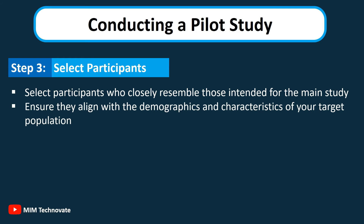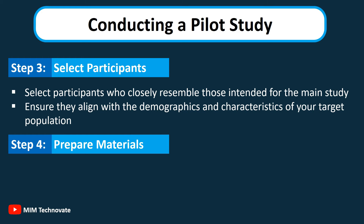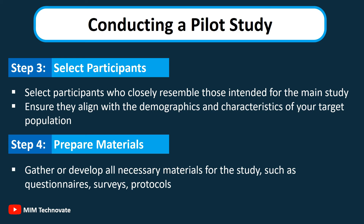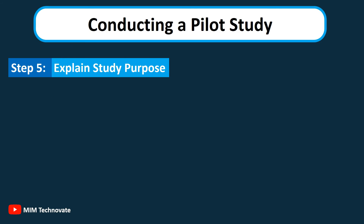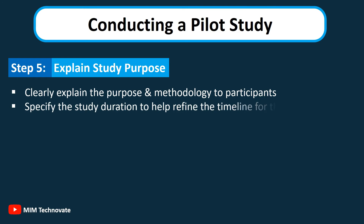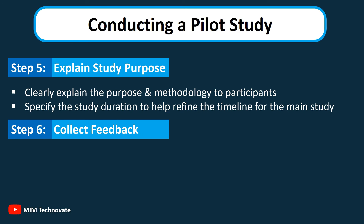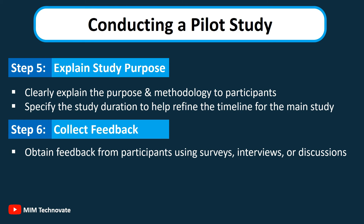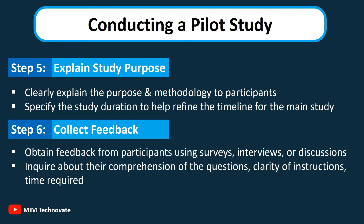Ensure participants align with the demographics and characteristics of your target population. Step 4 — Prepare Materials: Gather or develop all necessary materials for the study, such as questionnaires, surveys, protocols, etc. Step 5 — Explain Study Purpose: Clearly explain the purpose and methodology of the pilot study to participants; specify the study duration to help refine the timeline for the main study. Step 6 — Collect Feedback: Obtain feedback from participants using surveys, interviews, or discussions. Enquire about their comprehension of the questions, clarity of instructions, and time required.